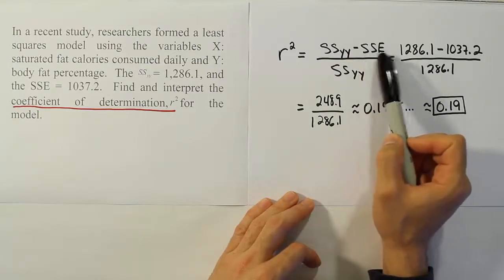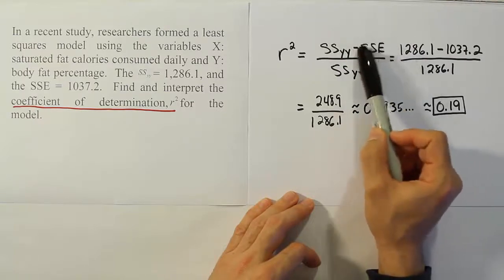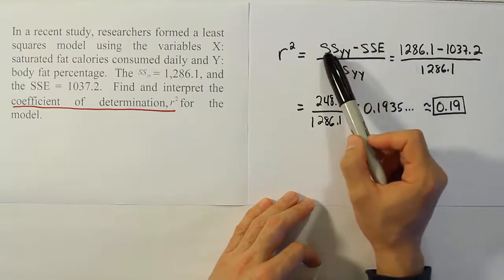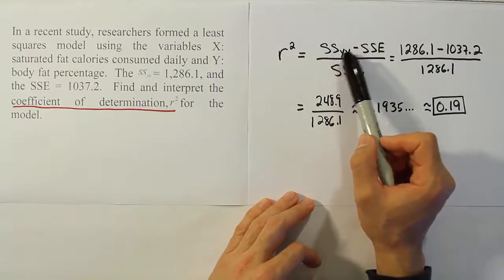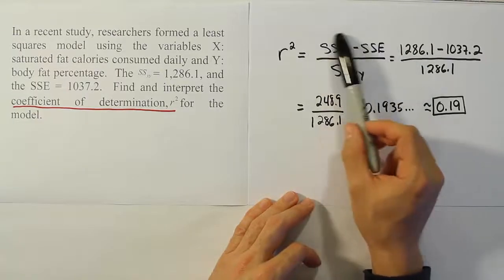All that's going to be part of the error term, all the things we didn't include in the model. So, essentially, when we subtract off those error terms or the variation that's due to the error from the Y variation, what we end up having is the variation in Y that's due to X.